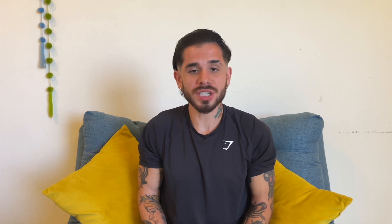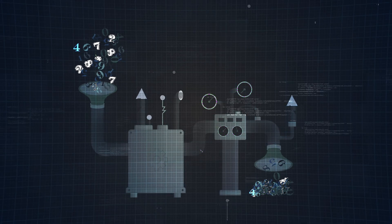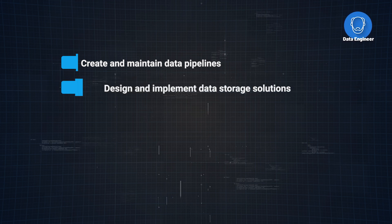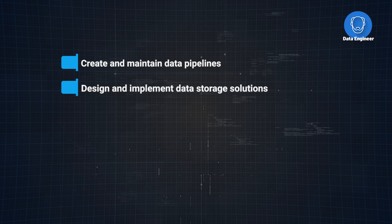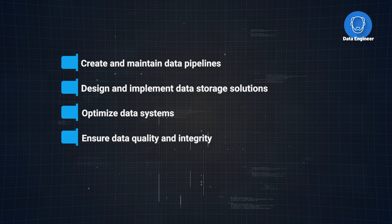Now let's dive a bit deeper into each role, starting with data engineers. As mentioned earlier, data engineers set up the systems to make sure that everyone else has reliable data to use. As the saying goes, garbage in, garbage out — if the data isn't clean and accurate, it can lead to inaccurate conclusions. They create and maintain data pipelines, design and implement data storage solutions, optimize data systems, and ensure data quality and integrity.